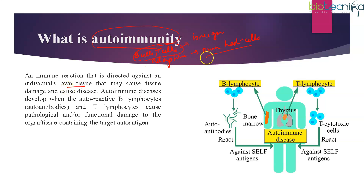Because this reaction is directed against your own tissue, it leads to tissue damage and various diseases. Autoimmune diseases develop when autoreactive B lymphocytes produce autoantibodies, and T lymphocytes cause pathological or functional damage. It can affect any organ or tissue wherever the antigen is present. As shown in the figure, B lymphocytes release antibodies known as autoantibodies, which go and bind to the host's own tissues.